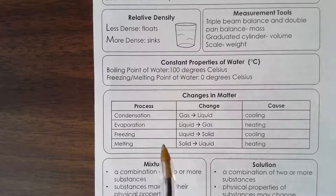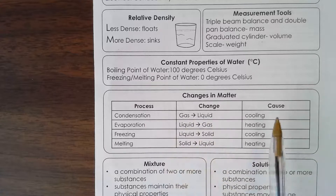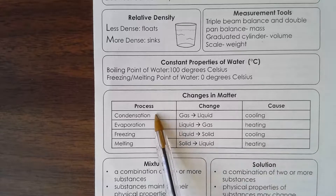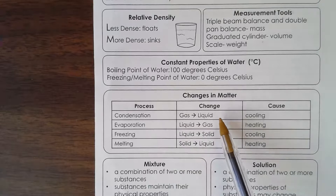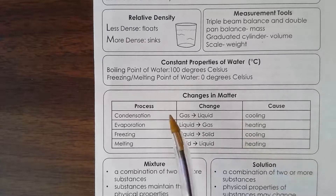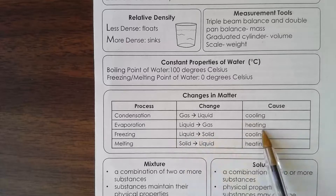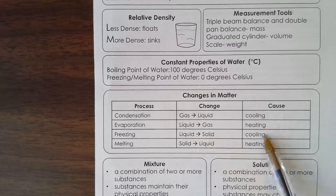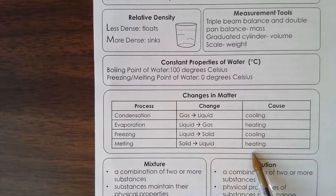Changes in matter. Condensation is when a gas turns back to a liquid, and that happens because it cooled off. You're in a hot shower, steam gets on the mirror, the mirror is cold, so it cools the steam off and it turns into little droplets of water. Evaporation is when a liquid turns to a gas, and you do that by heating it up. Freezing is turning a liquid into a solid by cooling. You have to put water in the freezer for it to freeze. And melting is when you take a solid and it turns into a liquid — that's because of heating.